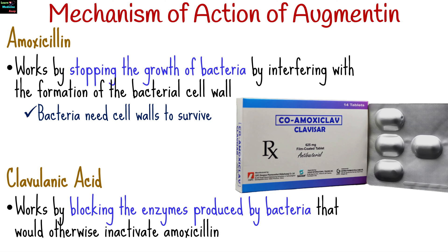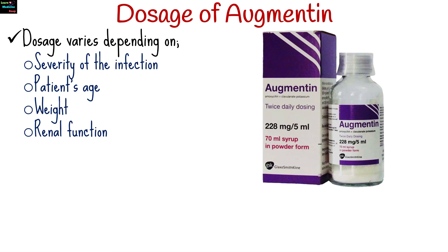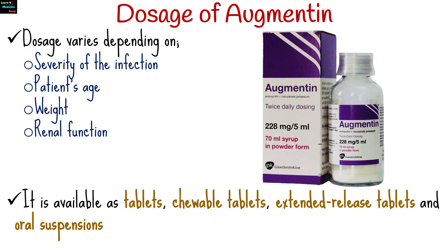Dosage of Augmentin varies depending on the severity of the infection, the patient's age, weight, and renal function. It is available in various formulations including tablets, chewable tablets, extended-release tablets, and oral suspensions. Dosage should always be determined by a healthcare professional, and patients should strictly adhere to the prescribed regimen.